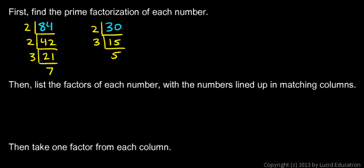Then list the factors of each number with the numbers lined up in matching columns. So here's what we do. Here's 84 and 30, and I list my numbers like this. 84 is 2 times 2 times 3 times 7, and put your 7 way over here. Because when we list the factors of 30, we want to list 2 times 3 times 5.